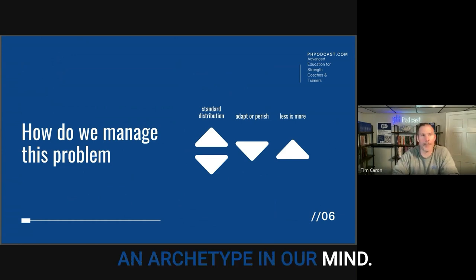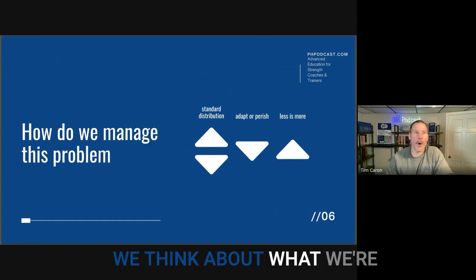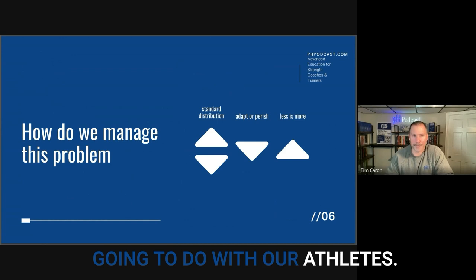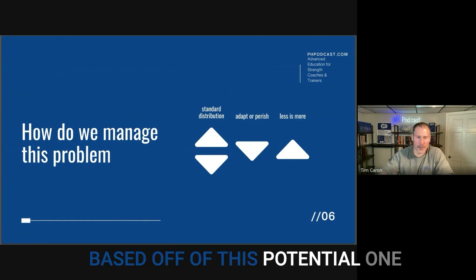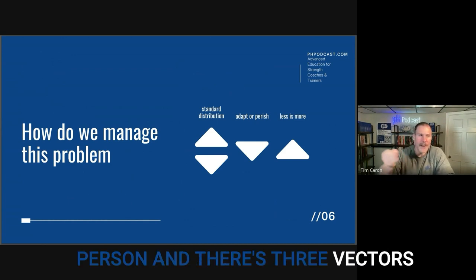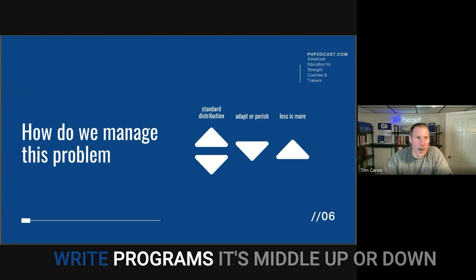Because what we do is create an archetype in our mind. We think about what we're going to do with our athletes based off of this potential one person. And there's three vectors that we can think about when we write programs.